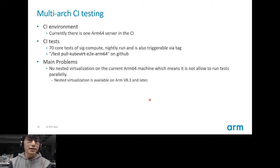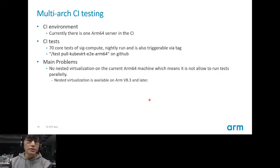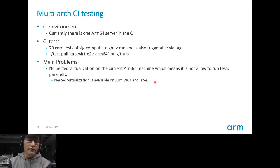For multi-arch CI testing, currently there is one ARM64 server in the KubeVirt CI. We have enabled 70 core tests of SIG compute. It runs nightly and is trackable under the label test for KubeVirt E2E ARM64 on GitHub. The main problem we face in enabling CI on ARM64 is that there is no nested virtualization on the current ARM64 machine, meaning we cannot run tests in parallel. Nested virtualization is available on ARMv8.3 and later, but as far as I know, the ARM ARC CPUs on the market are not yet supporting nested virtualization.